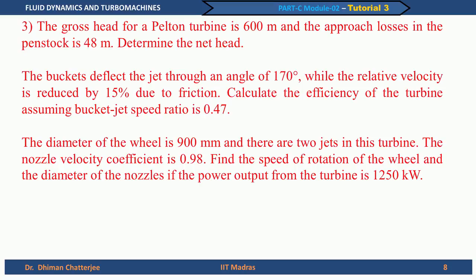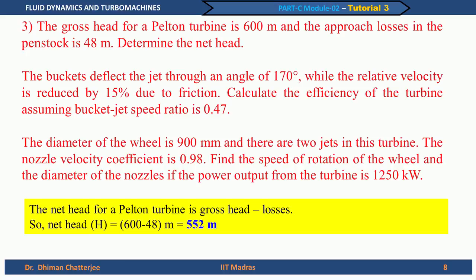The gross head for the Pelton turbine is 600 meters and the approach losses in the penstock are 48 meters. The net head available to the turbine is gross head minus approach losses, giving a net head of 552 meters. The buckets deflect the jet through an angle of 170 degrees while relative velocity is reduced by 15 percent due to friction. We need to calculate the efficiency assuming a bucket-to-jet speed ratio of 0.47. The wheel diameter is 900 mm, there are two jets, and the nozzle velocity coefficient is 0.98. We also need to find the rotational speed and nozzle diameter for a power output of 1250 kW.